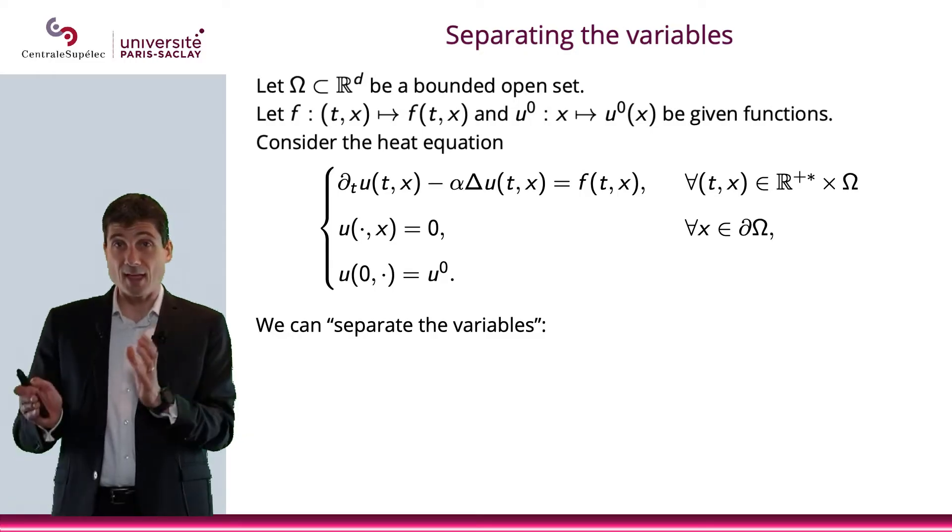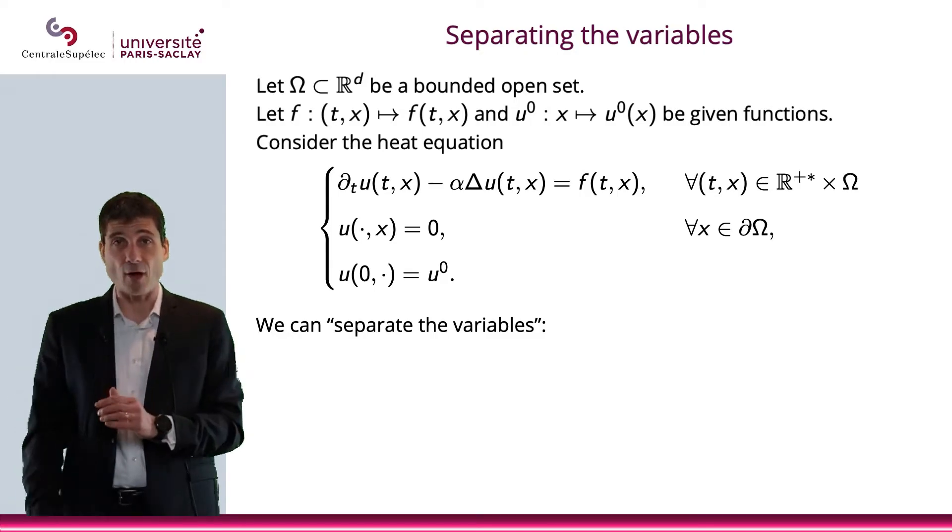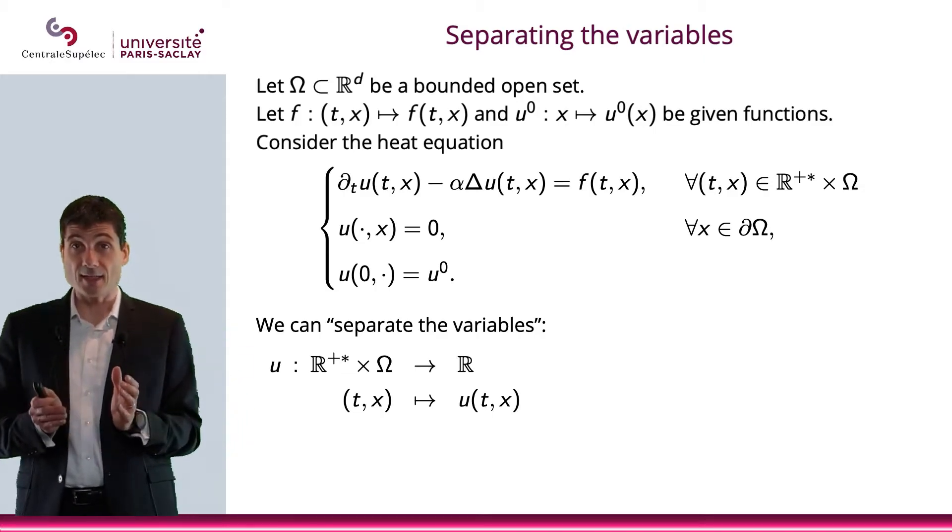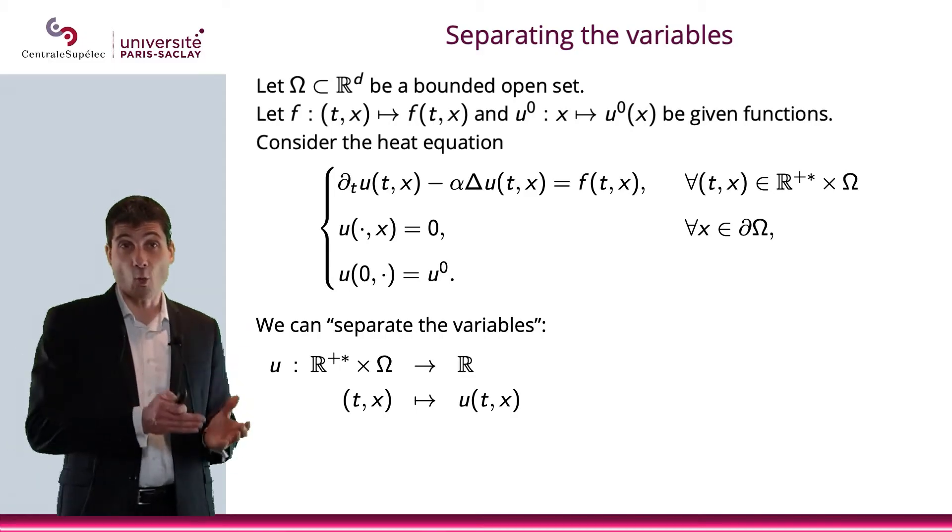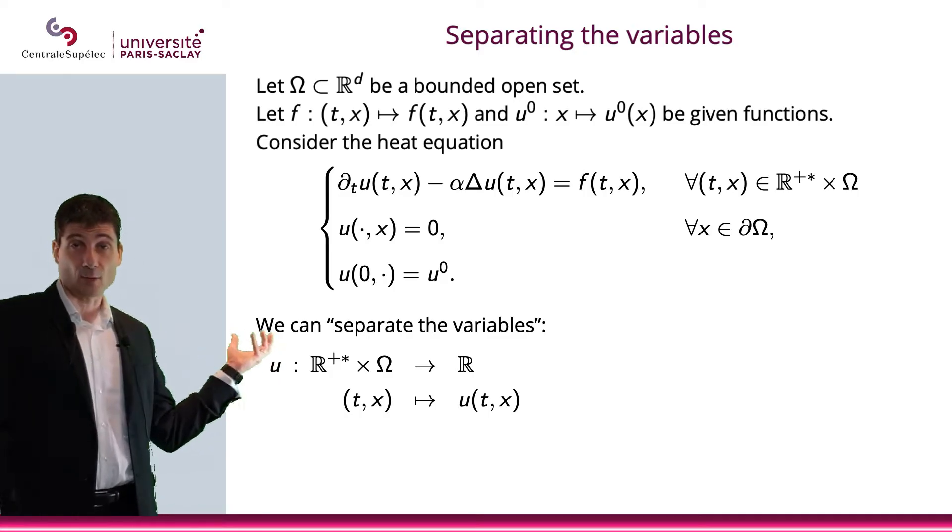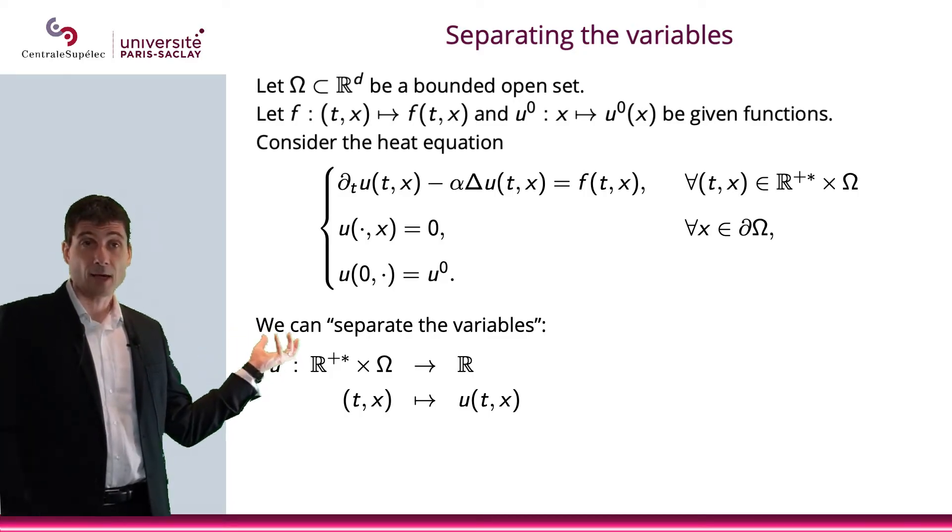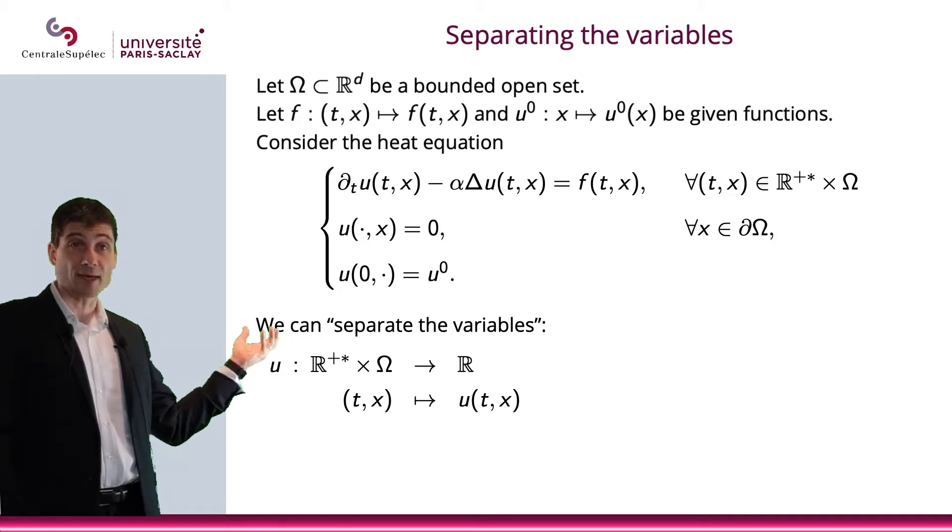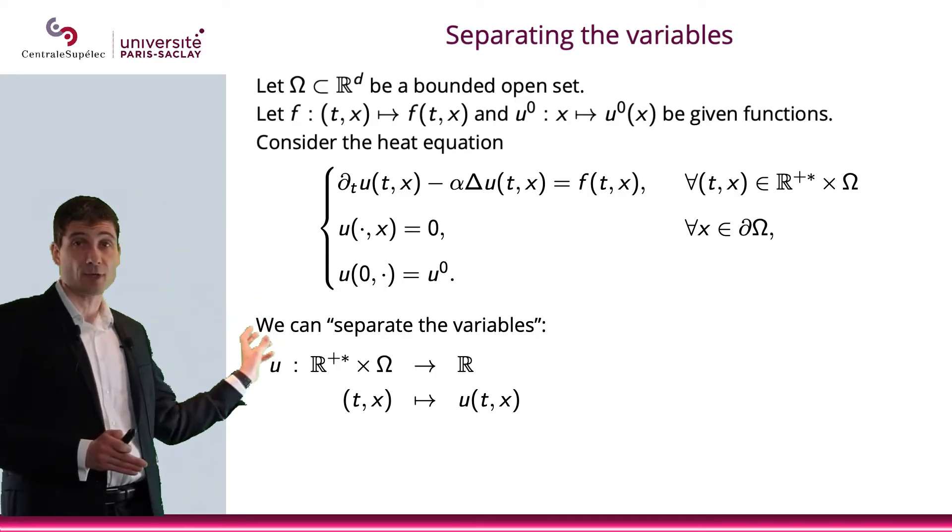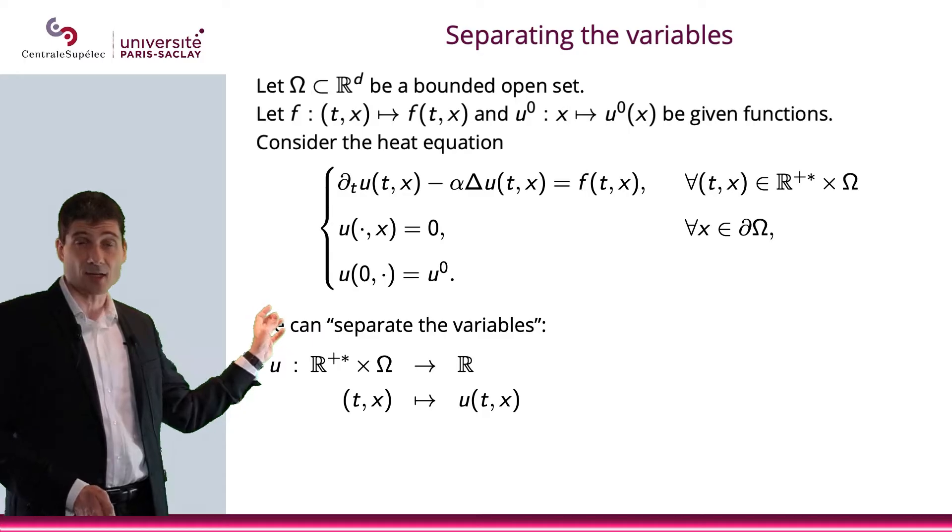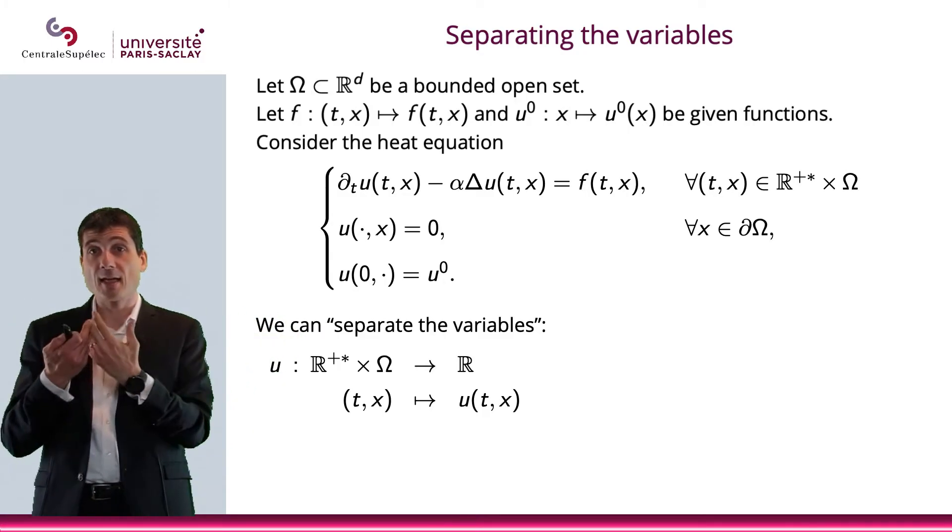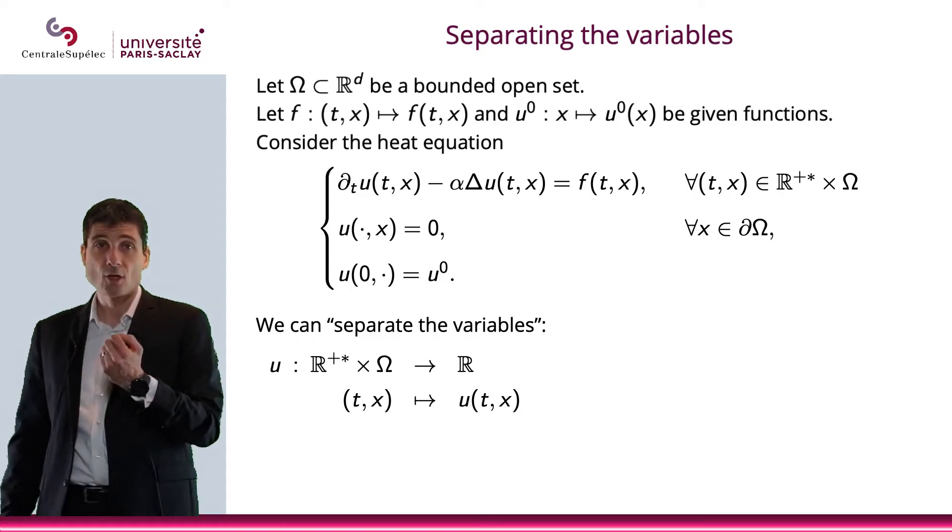Okay, now what we're going to do is we're going to separate the time and the space variables. How do we do this? Well, u is a function that is going from R^{d+1} to R. Or more specifically, from (0,+∞), which is the time space, times Ω to R. So for a given (t,x), t is in R^+ (0,+∞), and x is in Ω. And so to this (t,x), I associate a real number, which is u(t,x).